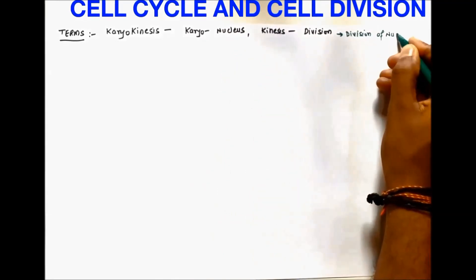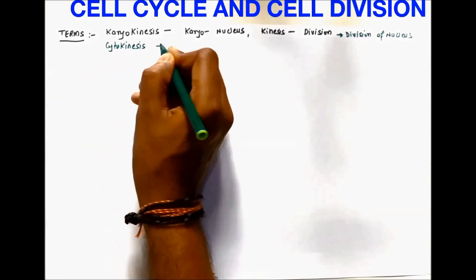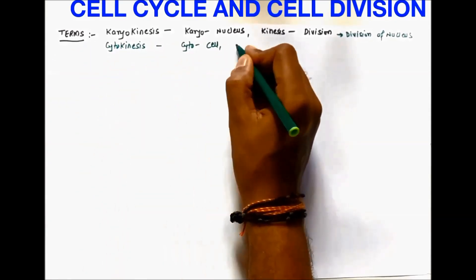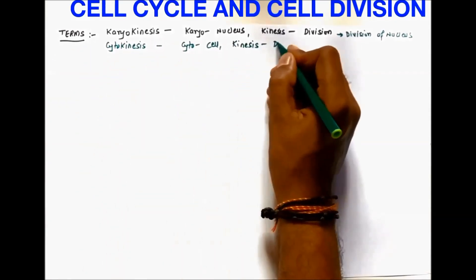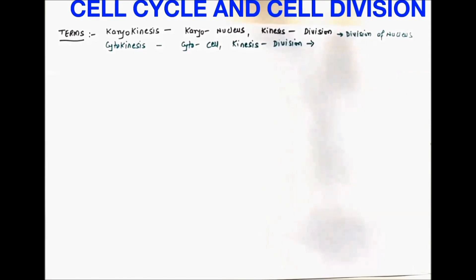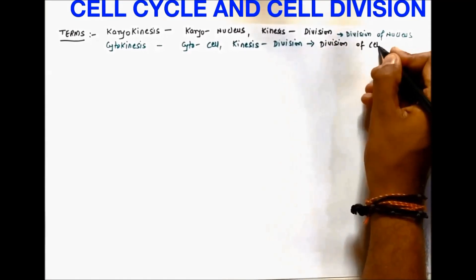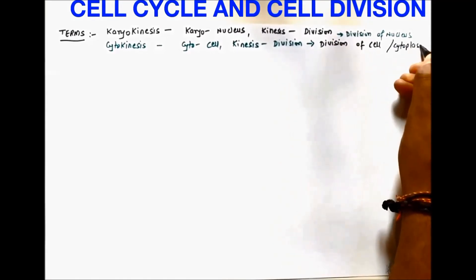Two important terms: karyokinesis — karyo means nucleus, kinesis means division — so it is the division of the nucleus. Cytokinesis — cyto means cell, kinesis means division — so it is the division of the cell or cytoplasm.